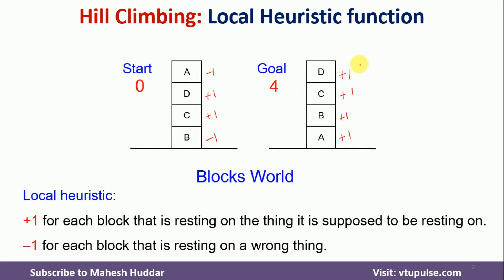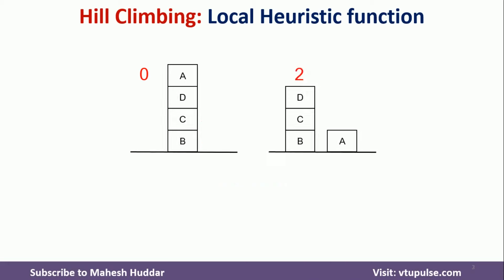Using this local information, we have to go from start state to goal state. We apply operators at the start state. The first operator is to bring A to the ground. B is at an incorrect position, so minus one. C and D are at correct positions, so plus one each. Adding everything, we get plus two.